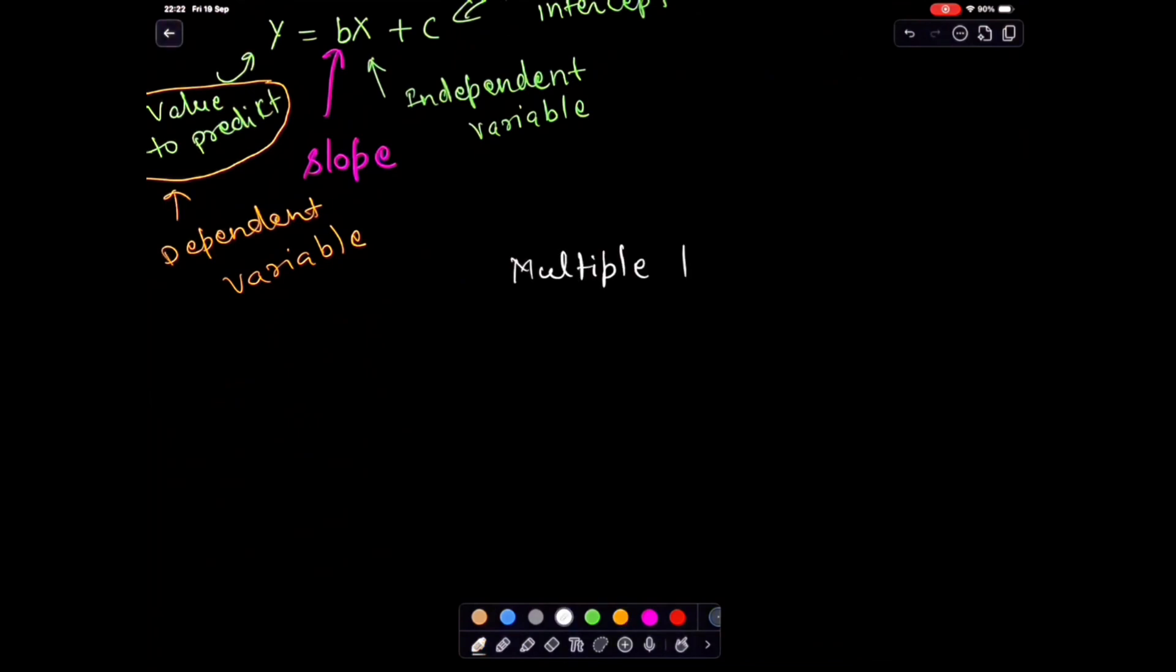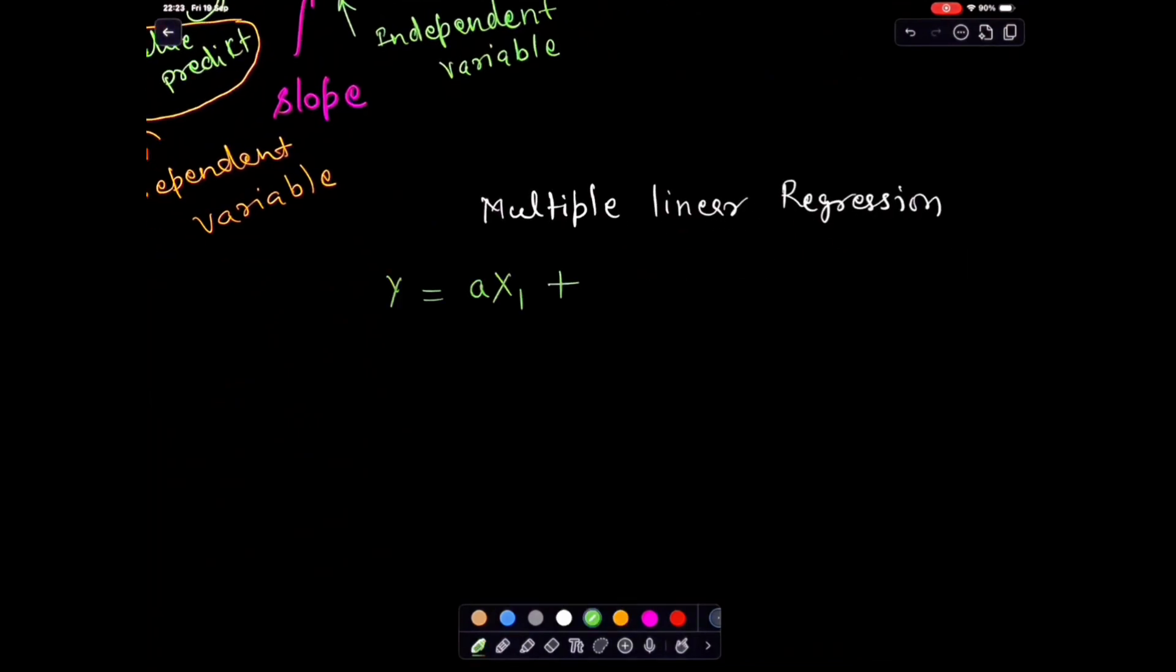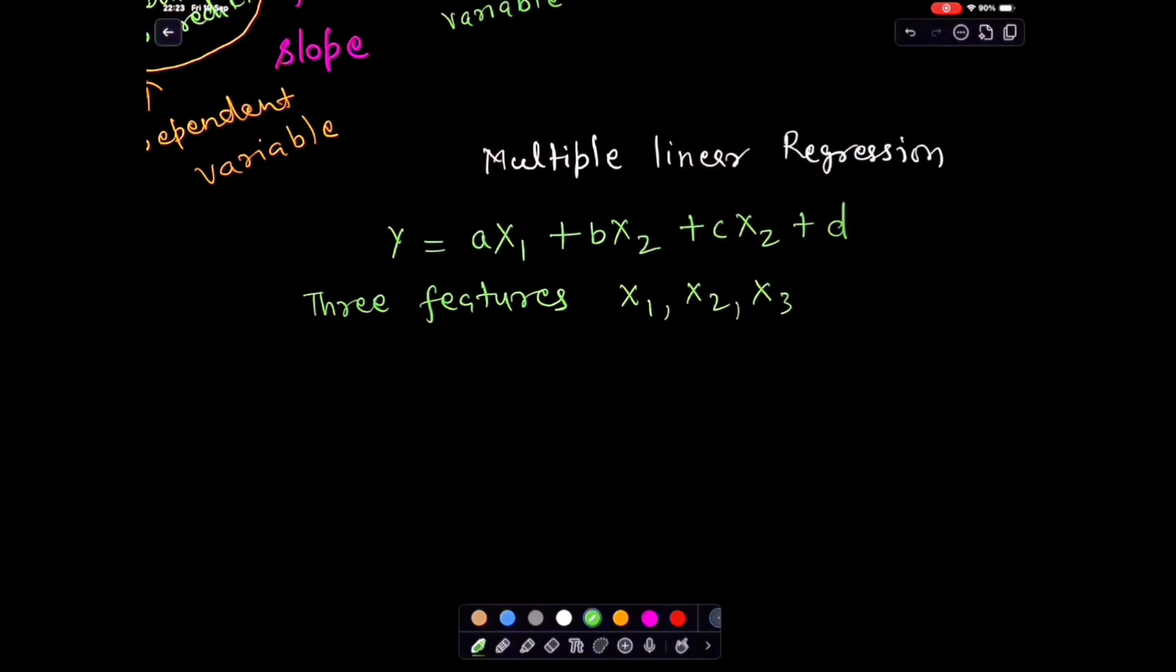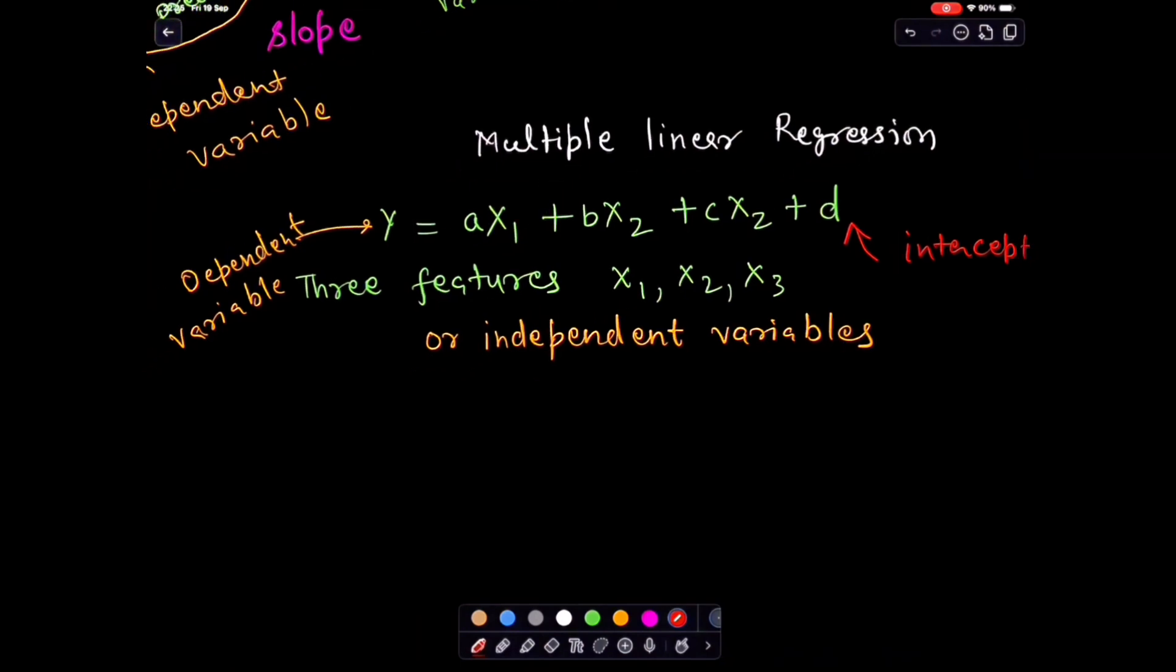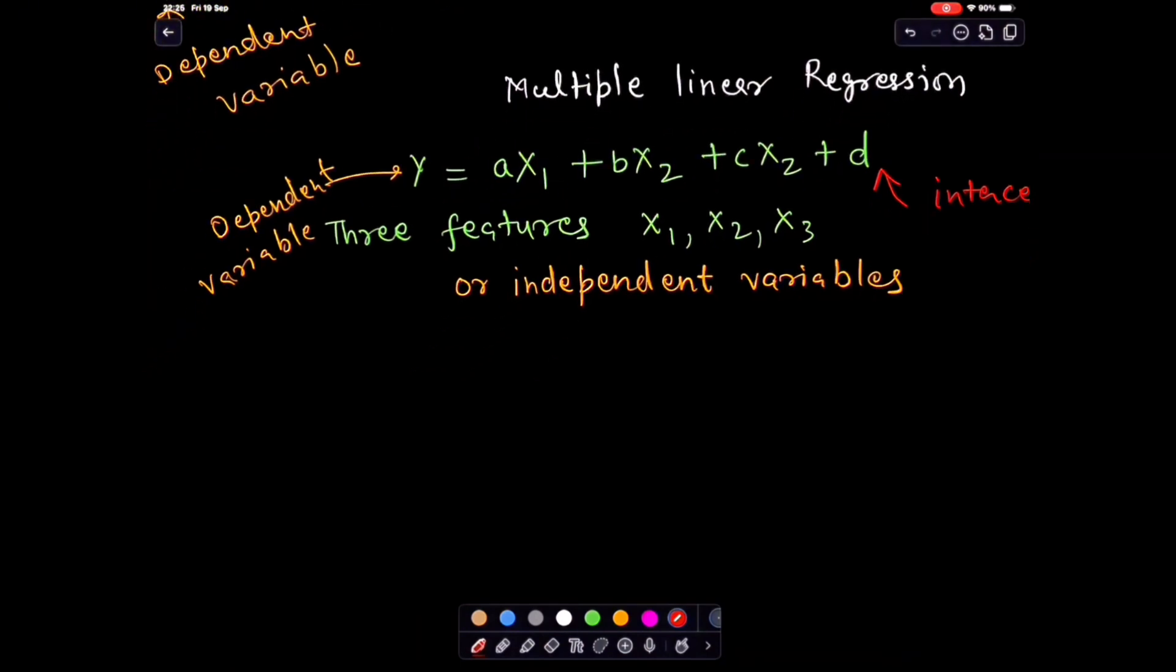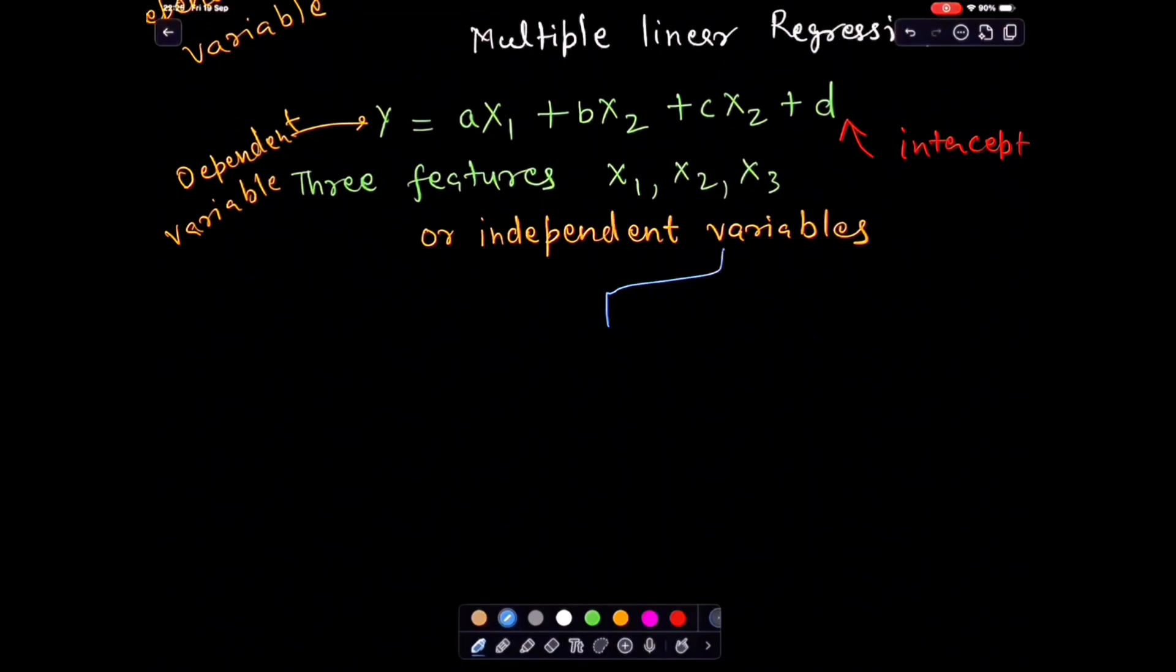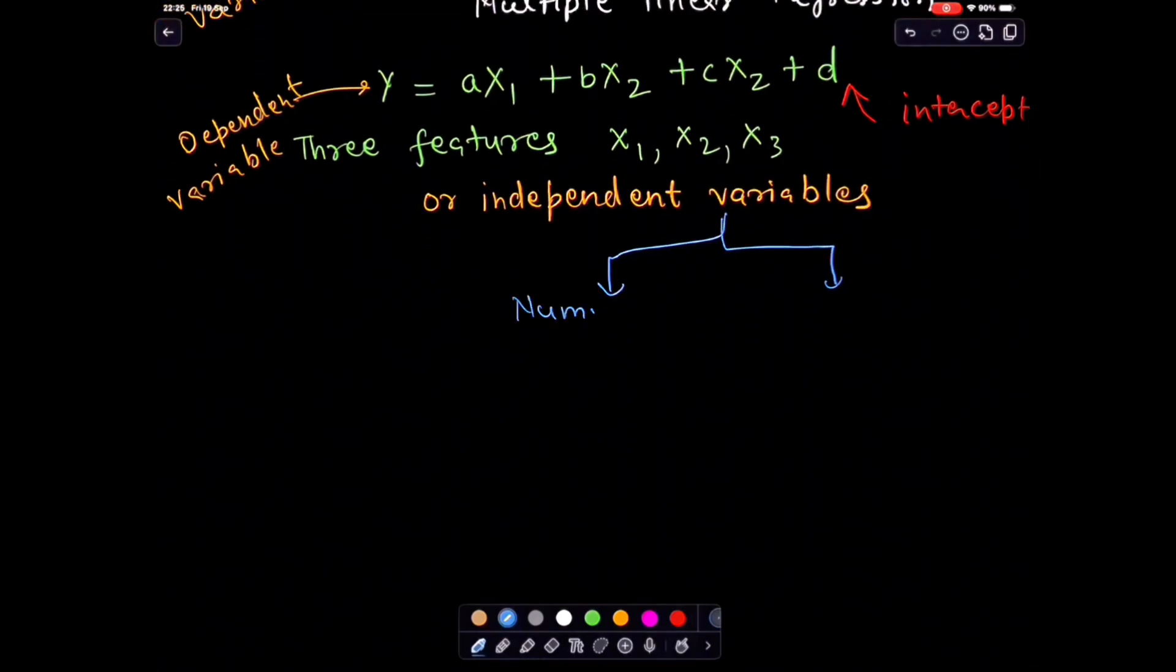But real life isn't this simple. House price, for example, doesn't depend on just one factor. It depends on size, location, number of rooms, maybe even age of the property. Then the equation becomes Y equals to AX1 plus BX2 plus CX3 plus D. This is multiple regression. And here is the key: each of these X's is a variable. Before we analyze them, we need to know what type of variable each one is.